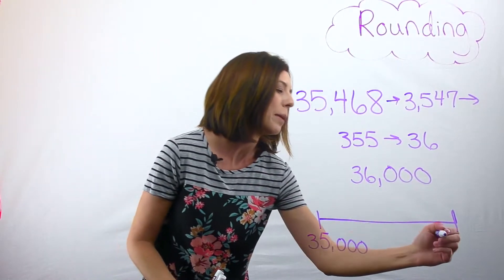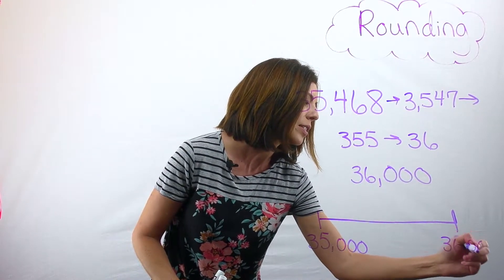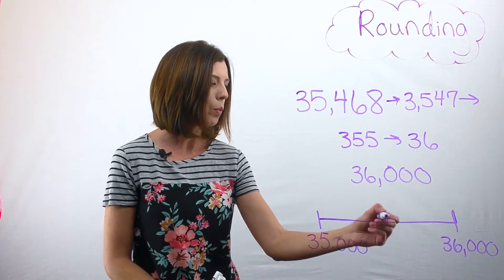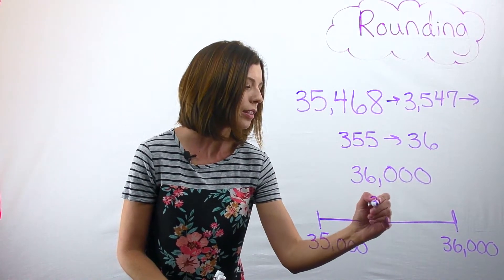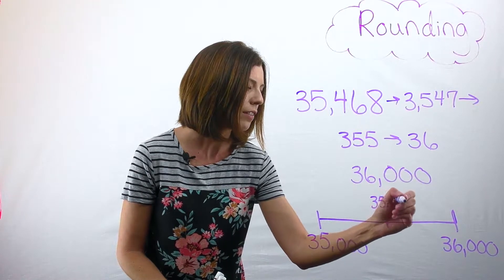And the other possibility is that you can pay me $36,000. Now I need to think about what amount of money is in the middle. It would be $35,500.